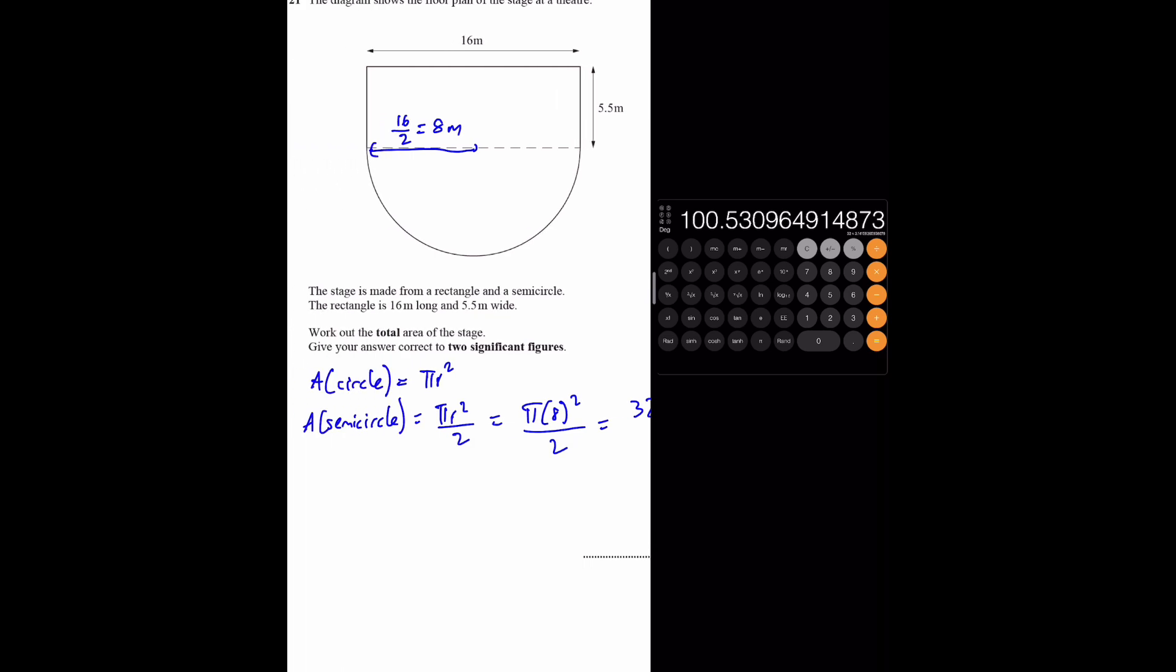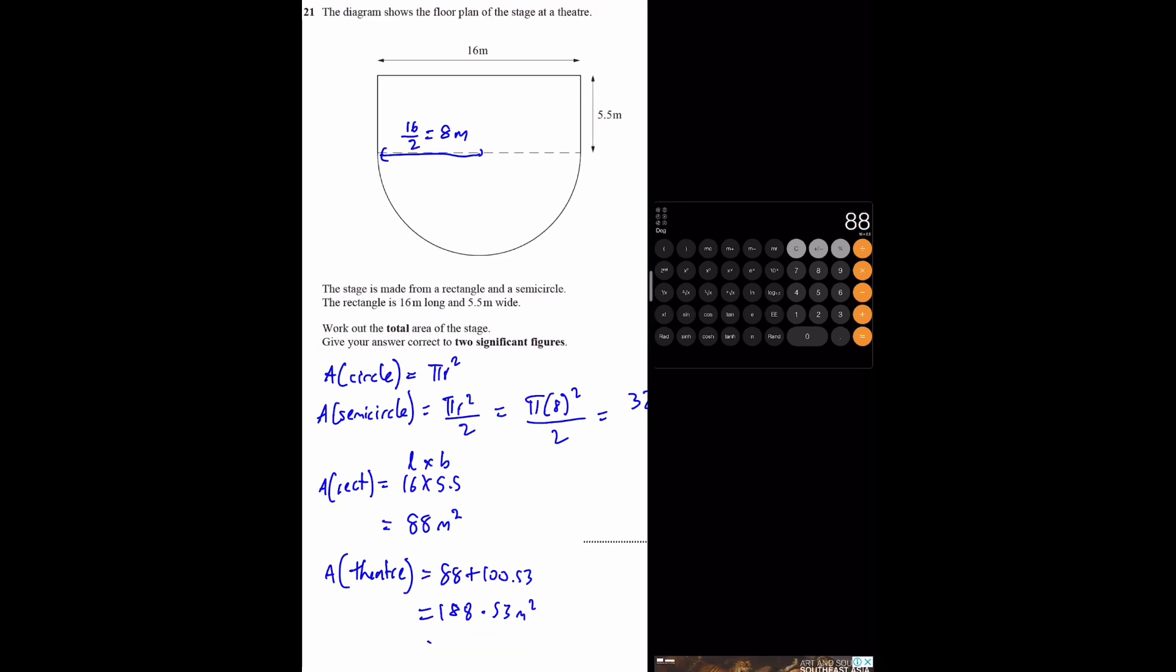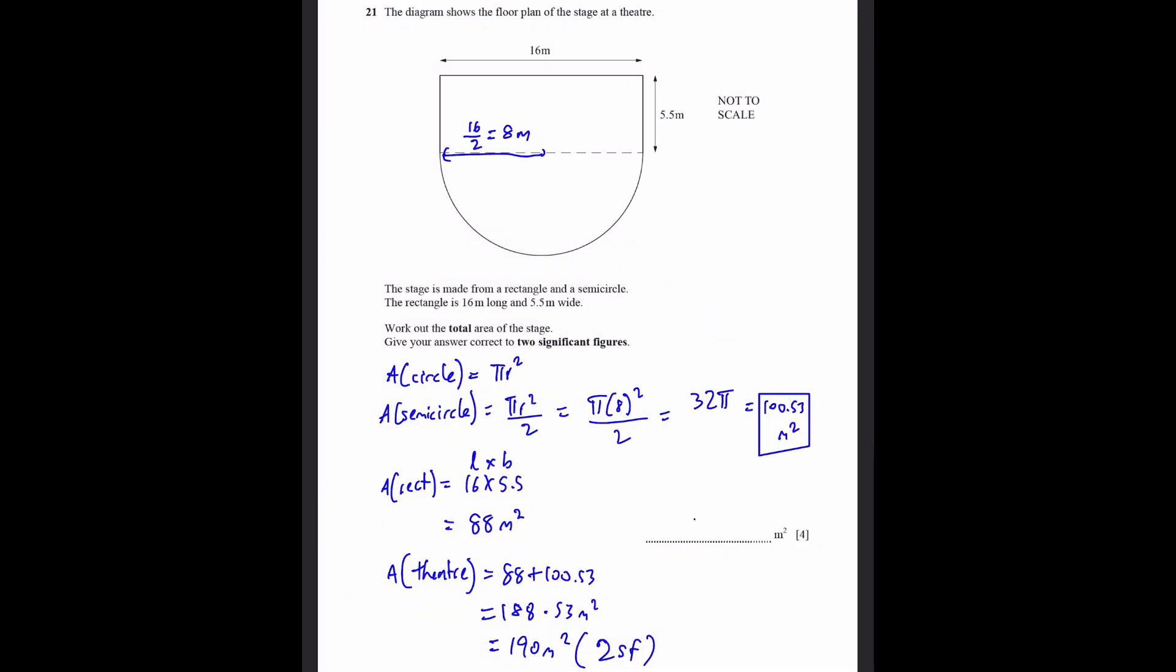Now, area of rectangle. That will be 16 into 5.5, because this is length, this is breadth. 16 times 5.5, we get 88 meters squared. The area of the full stage is 88 plus 100.53, which equals 188.53 meters squared. To two significant figures, this is 190 meters squared. That's the answer.